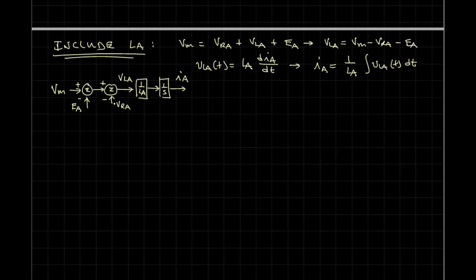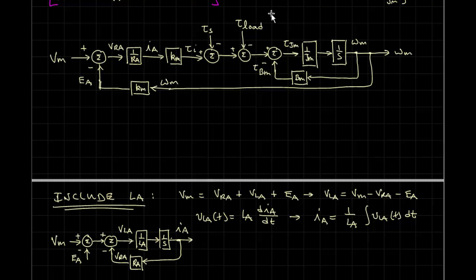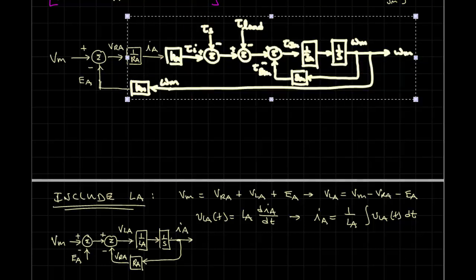We now note that V-R-A is found by multiplying I-A times R-A, which we add now. And now at this point, we can return to the original model, and we can copy the rest of it.